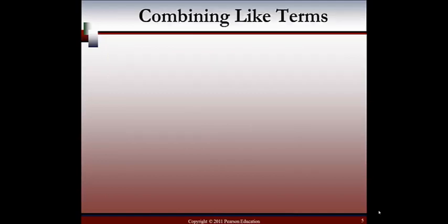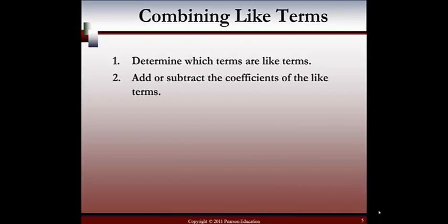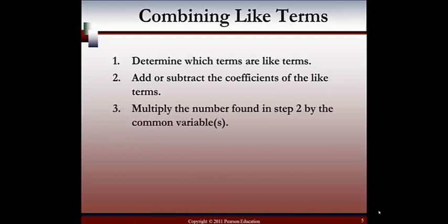Combining like terms: first, we need to determine which terms are like terms. Then we need to add or subtract the coefficients of the like terms. Then we multiply the number found in step two by the common variables. Here's an example: we have 5a plus 7a. First, do we have like terms? We have 5a and 7a — both have the variable a with the same exponent, so we can combine them. We add the coefficients: 5 plus 7 gives us 12a.